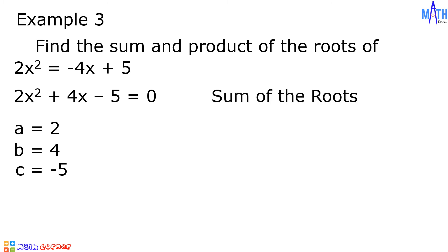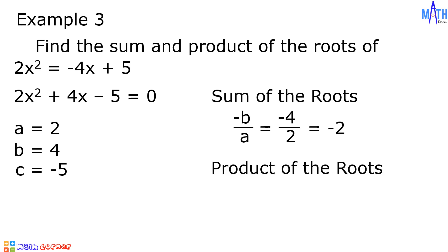The sum of the roots: negative b over a is equal to negative 4 over 2, which equals negative 2. The product of the roots: c over a is equal to negative 5 over 2. Since negative 5 over 2 is already expressed in lowest term, the product of the roots is equal to negative 5 over 2.